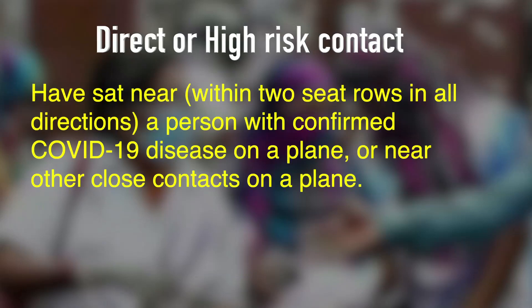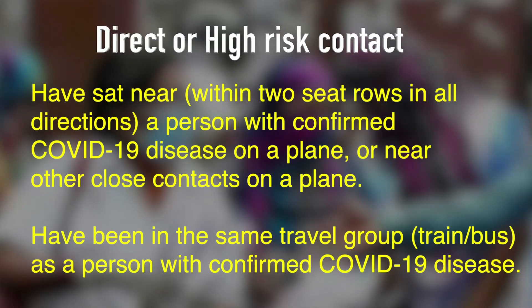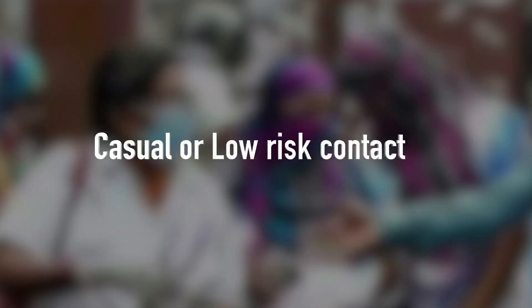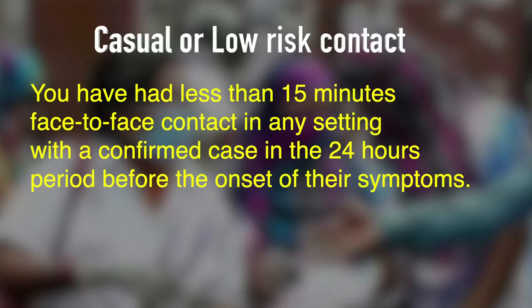If a COVID-positive case was traveling in a plane, those sitting two seats in front, two seats behind, and at the sides also have a chance of getting infected. People who traveled in the same train or bus with a COVID-positive patient are also at high risk. People with low risk are those who had casual contact of less than 15 minutes within 24 hours of the COVID patient being tested positive.